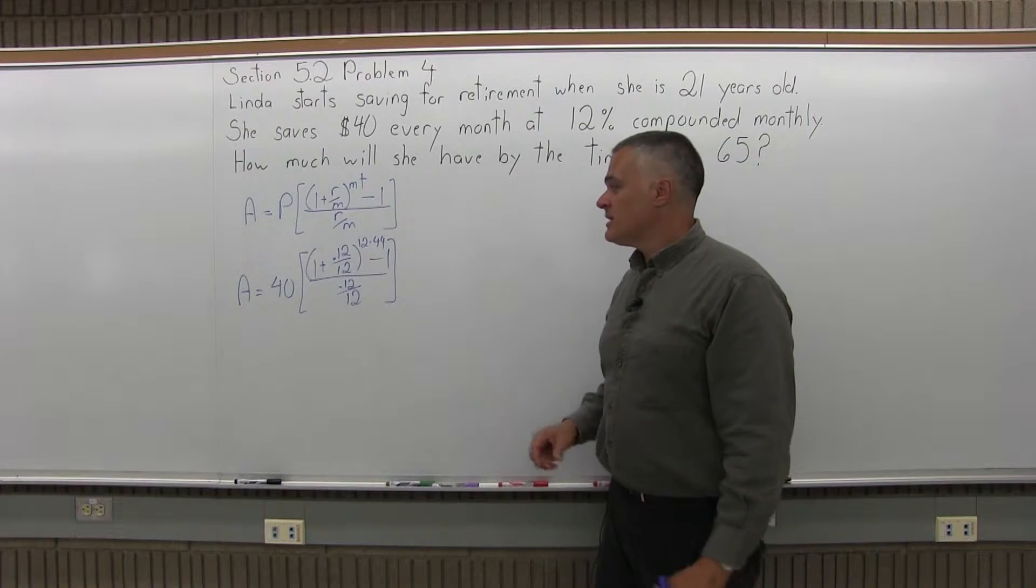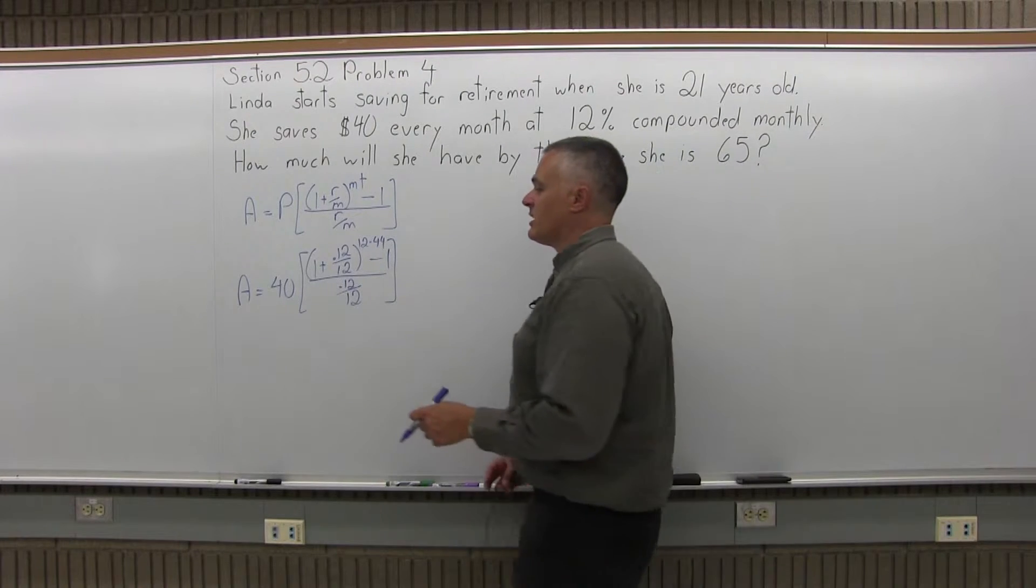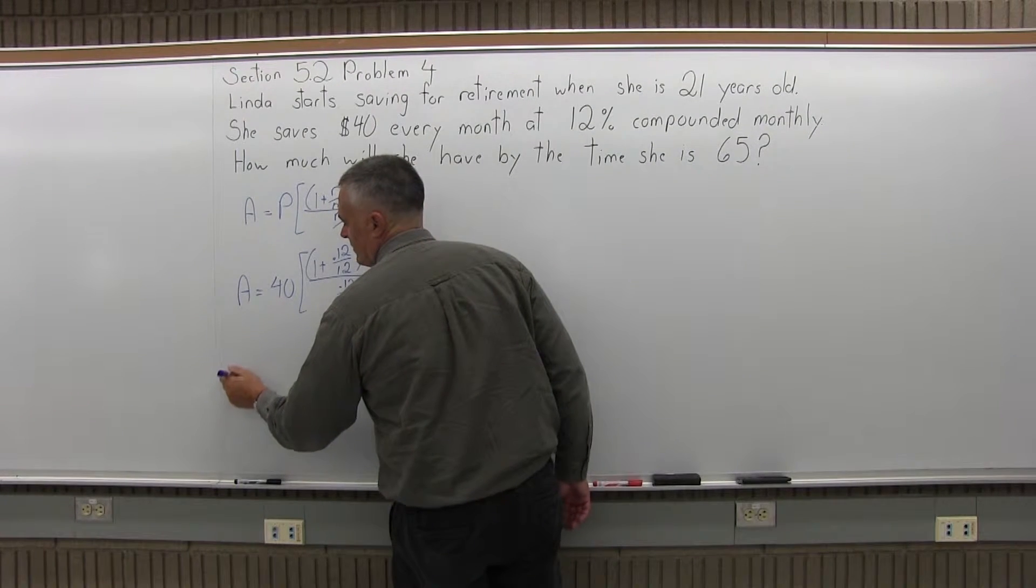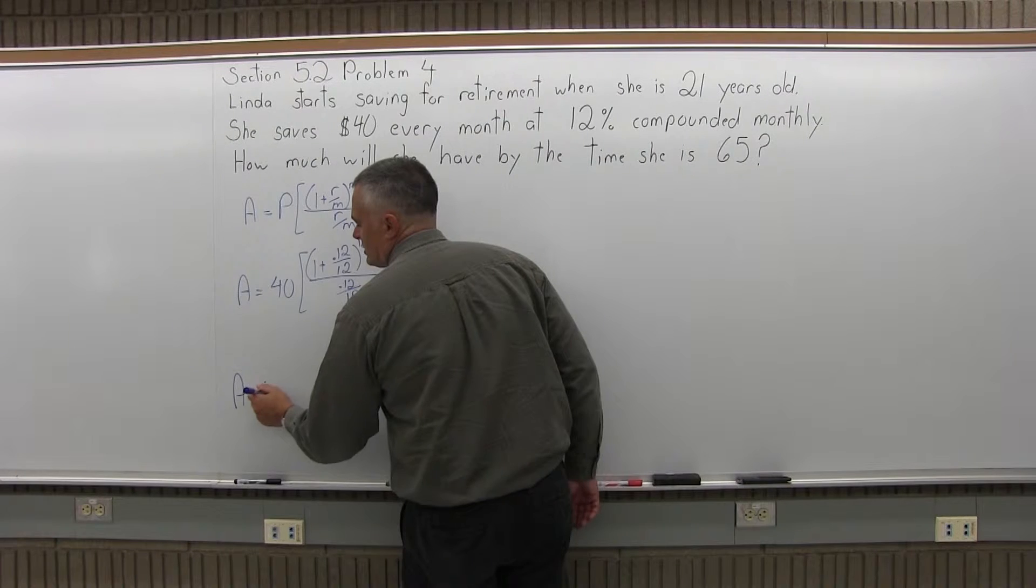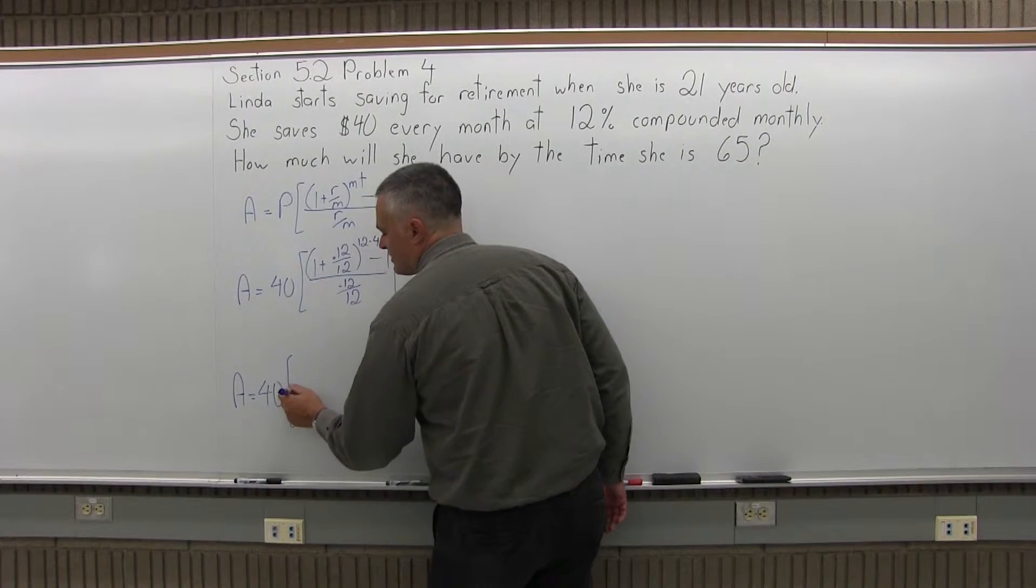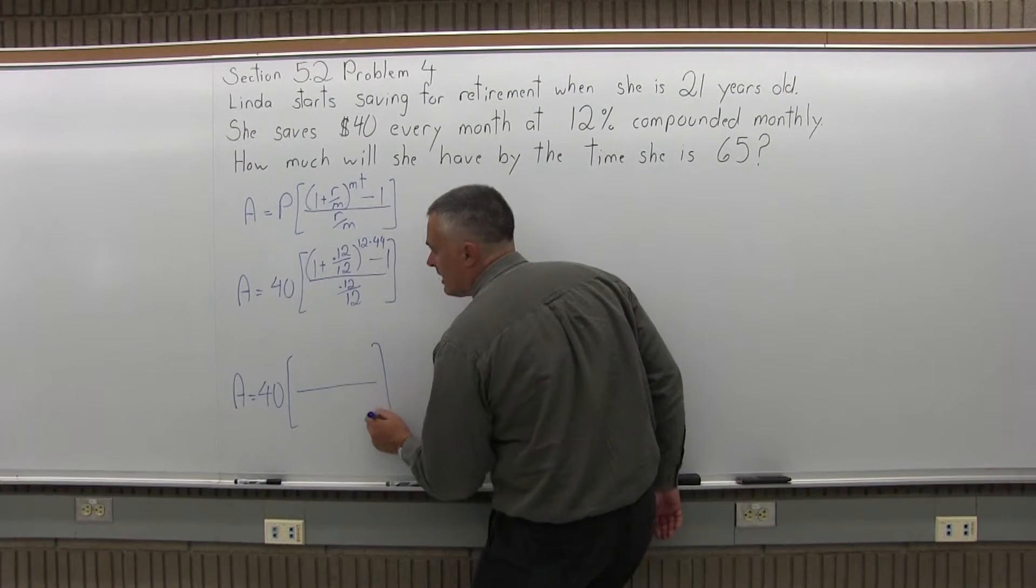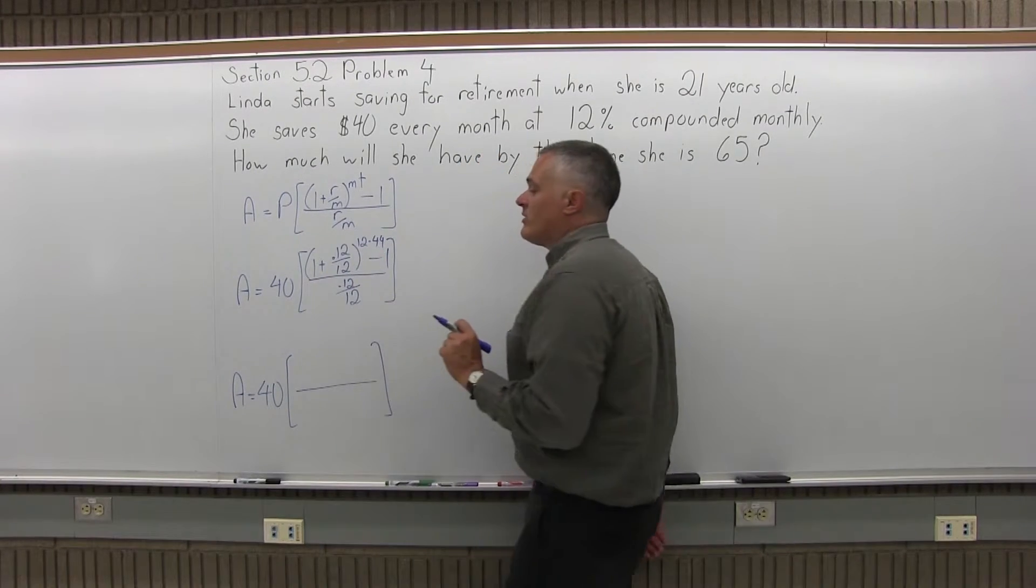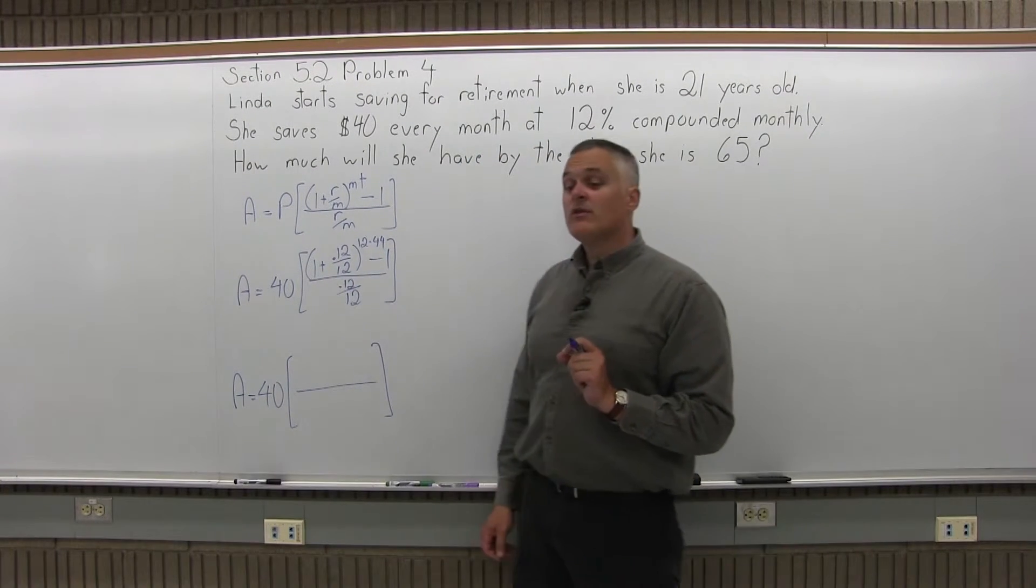Next I'll start some of the computation. I'm going to start in my parentheses, what I usually do. So A equals, there's a 40 in front of the brackets. In the brackets we have a numerator and a denominator. Now, in the numerator, in my parentheses,